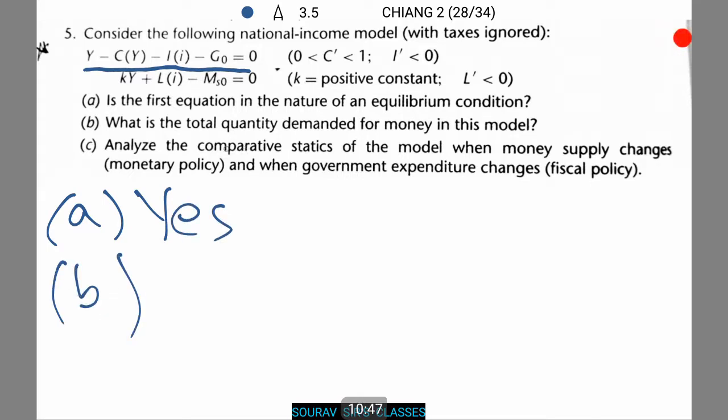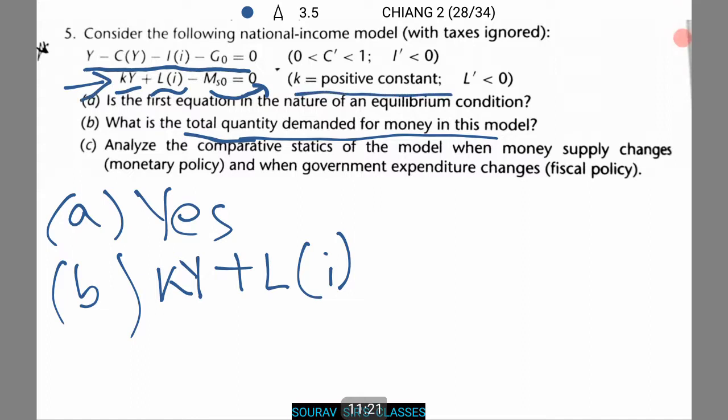For the second one, we have to find the total quantity demanded for money in this model, which will be equals to kY plus LI. This is because when we take this term on the right hand side, we are left with this term and this is the actual term for the total quantity demanded for money. In this case however, remember k is a positive constant and L dash is less than 0.